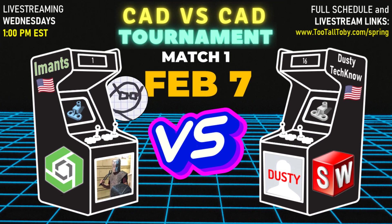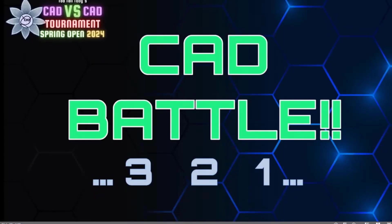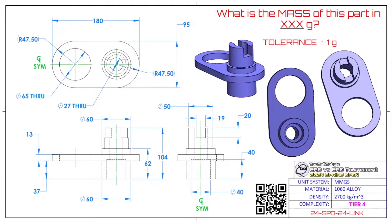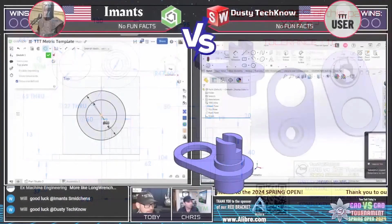Here we go. This very first CAD battle of our 2024 Spring Open CAD vs. CAD tournament begins in 3, 2, 1, go. What is the mass of this part in grams? The tolerance is plus or minus 1 gram. The material is MMGS units. The material is 1060 alloy. This is a Tier 4 complexity part. Our runners are grabbing a screen capture of this 2D print and attempting to jump into their CAD system of choice to turn this into a 3D model. I'm going to flip over to the CAD vs. CAD battle screen and we're going to see how it is done.